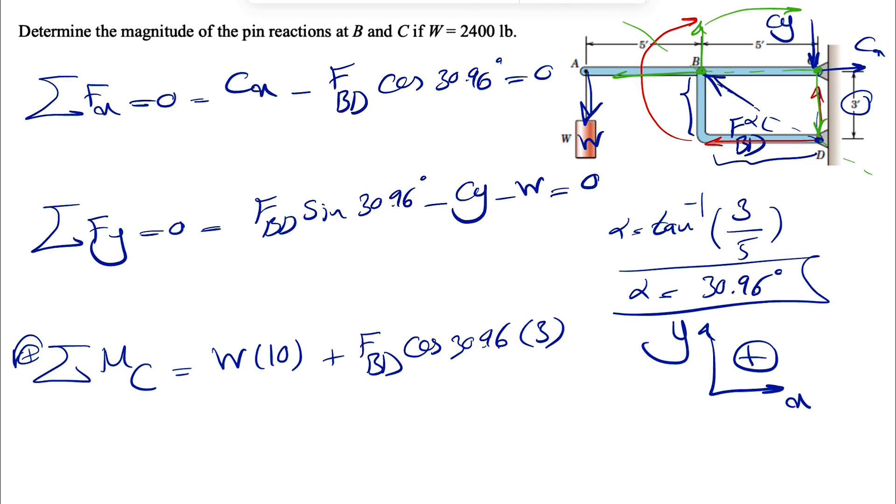So position vector could be any point that we are trying to find a moment about, which in this question, we are trying to find a moment about point C, to any point on the line of action of the force. And obviously, we didn't go in the middle of B and D, because it's just going to make our equation and finding the moment harder. So that's why it's easier to go either with D or B.